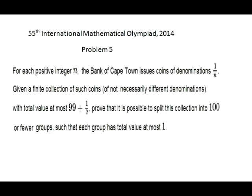For each positive integer n, the Bank of Cape Town issues coins of denominations 1/n. Given a finite collection of such coins, of not necessarily different denominations, with total value at most 99 plus 1/2, prove that it's possible to split this collection into 100 or fewer groups, such that each group has total value at most 1.